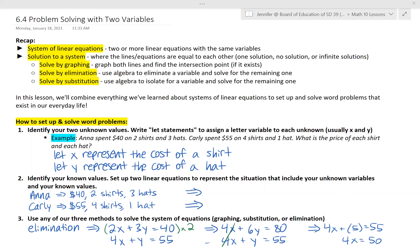You're going to write let statements to do this assignment. So in this example Anna spent $40 on two shirts and three hats. Carly spent $55 on four shirts and one hat. What is the price of each shirt and each hat? So in this problem we ask ourselves what are our unknown values. We don't know the price of the shirt, we don't know the price of the hat. So those are our two unknowns.